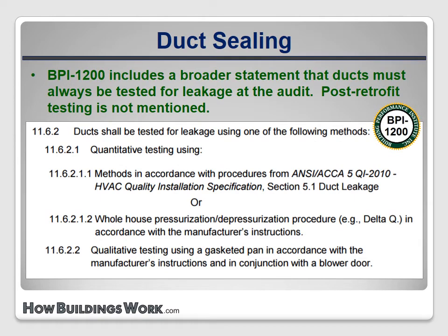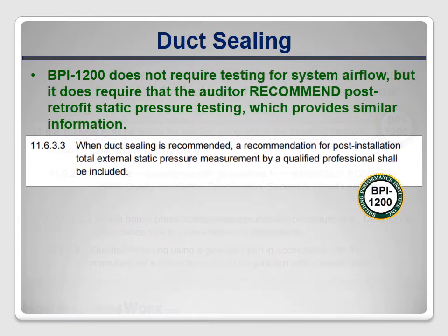BPI-1200 has broader duct requirements. First, it always requires duct leakage testing at the audit and provides a few options for test methods. It also requires that auditors recommend static pressure testing after any air sealing is done. However, it doesn't say anything about recommending post-retrofit leakage testing to verify the effectiveness of the work.